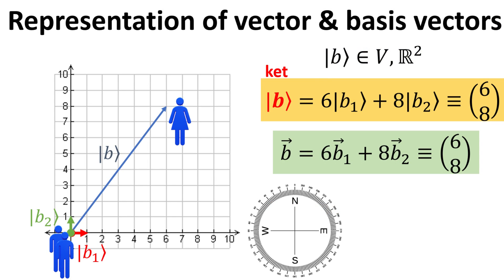Let's start with the Euclidean vectors, or geometric vectors, which are objects defined by a magnitude, or length, and a direction. For example, here we have the vector which denotes the position of Alice relative to Bob, which we denote as the b-ket.